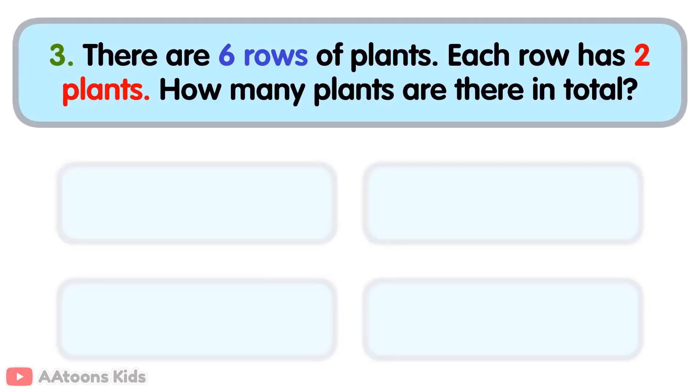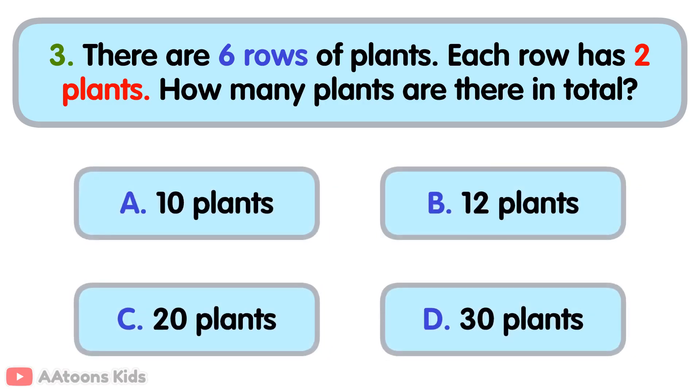There are six rows of plants. Each row has two plants. How many plants are there in total?